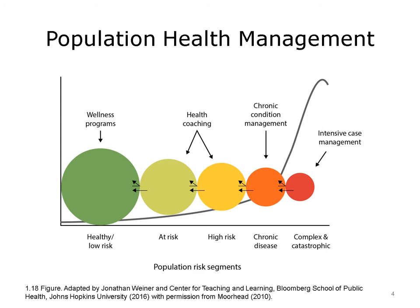Today, they prefer the term population health management because these programs are focusing on the entire target population, usually enrolled in a specific health plan or cared for by a particular accountable provider. This graphic, adapted from the Population Health Alliance, shows the continuum of care offered to groups of individuals who have or are at risk for a particular chronic condition. Understandably, both for the patient and the bottom line of the insurer, it is better to care for someone with an early low-risk stage than at a more severe, higher-risk stage, where a bad outcome is more likely.